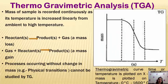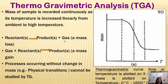In thermo-gravimetric analysis, we are taking a definite amount of sample and measuring the weight loss of the sample with increase in temperature. During this process, your reactants may convert into some products, or release of gas is observed. The released gas may react again with the reactant and show mass gain too. This process occurs with change in mass. If the sample does not show any change in mass, we can't do thermo-gravimetric analysis.